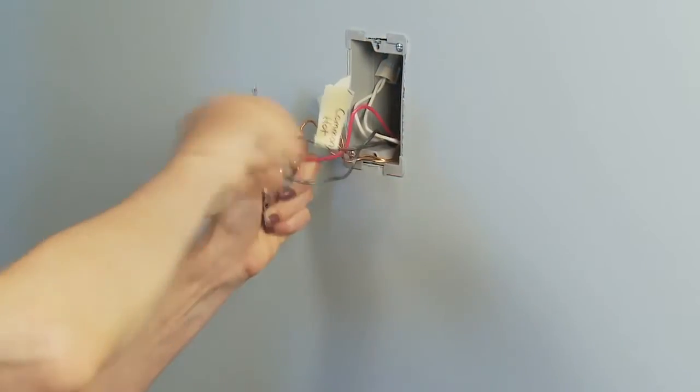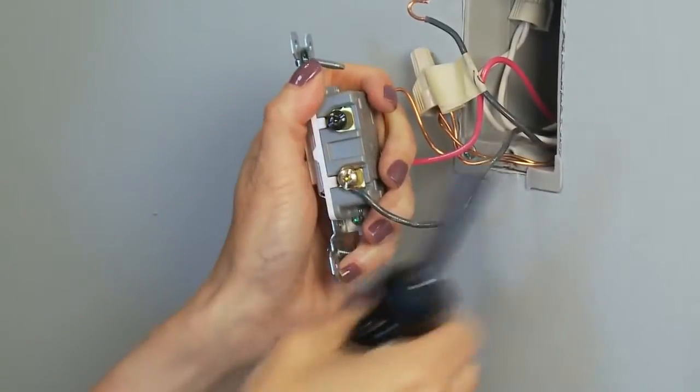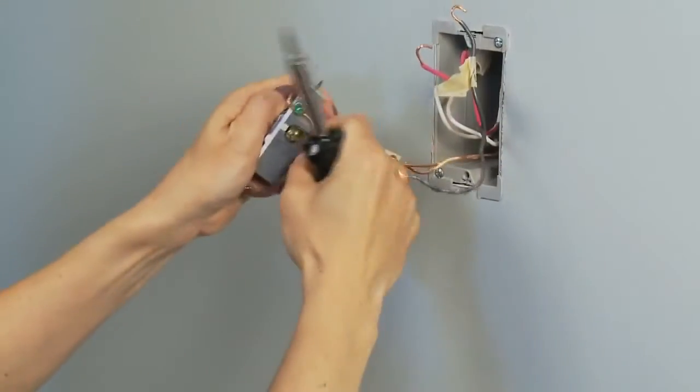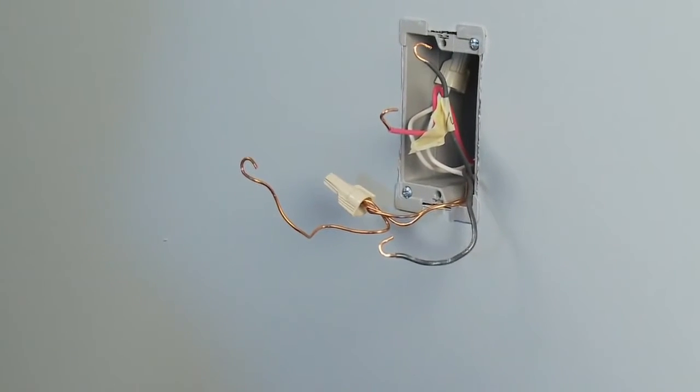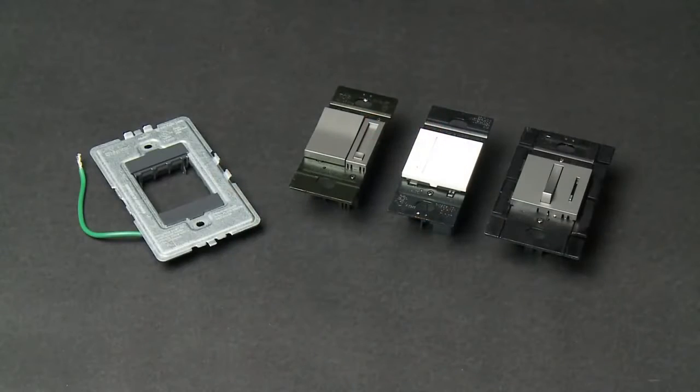Once your wires are labeled, remove them from the device by unscrewing the terminal screw or by cutting the wires off of the terminal. Now your old device is completely removed, and you may start your Adorn Dimmer installation.